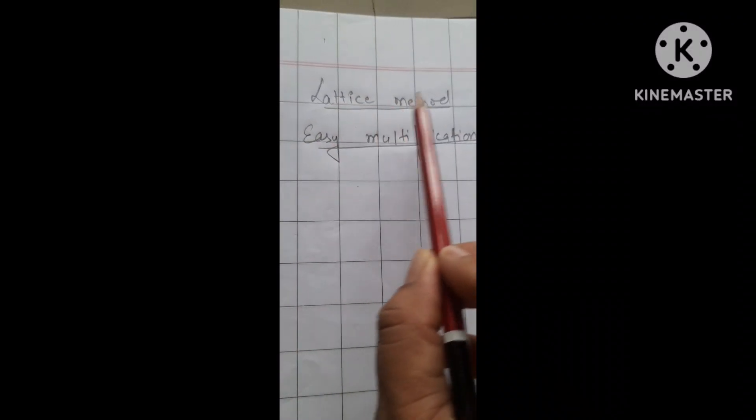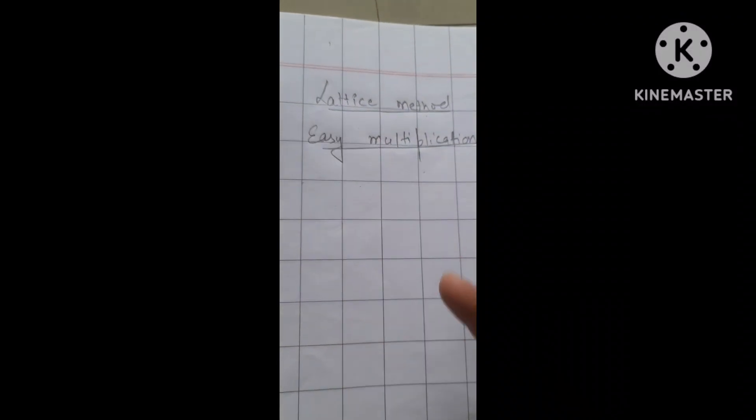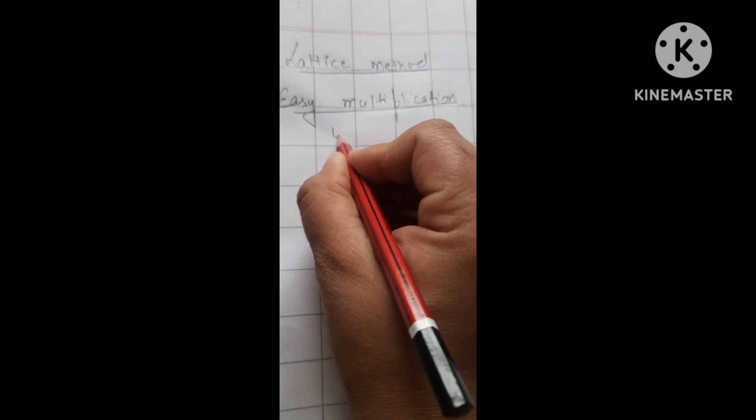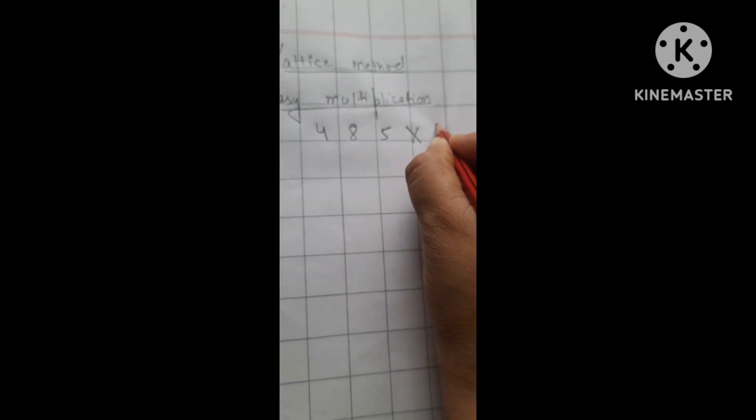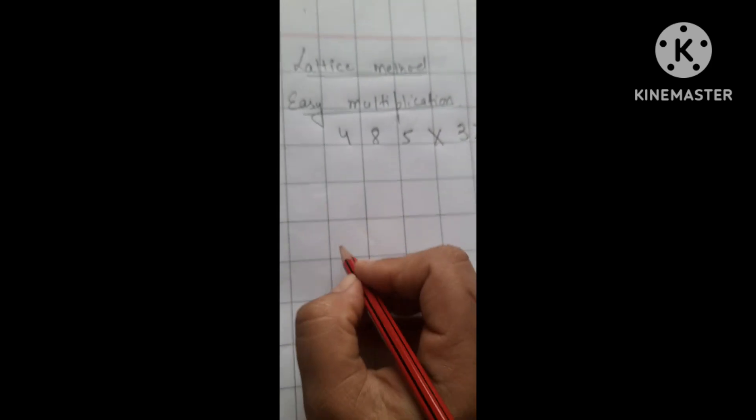Hello friends, welcome to my channel. I am using a new method for easy multiplication, which is the lattice method. We will take an example, like 485 and multiply by 32.